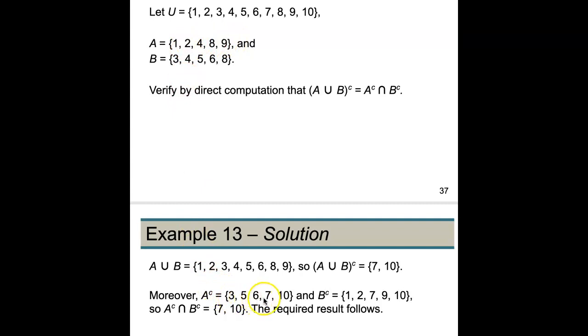And then B^c is going to be everything in here that is not in B, so that's going to be {1, 2, 7, 9, 10}.